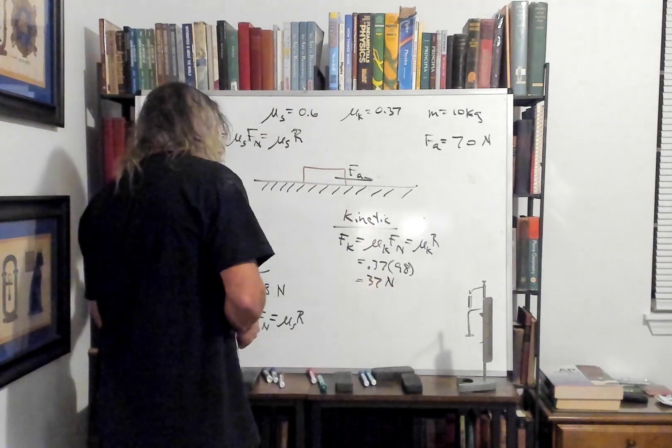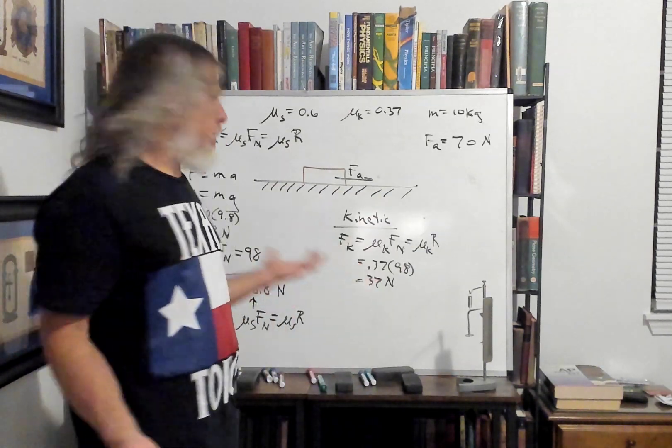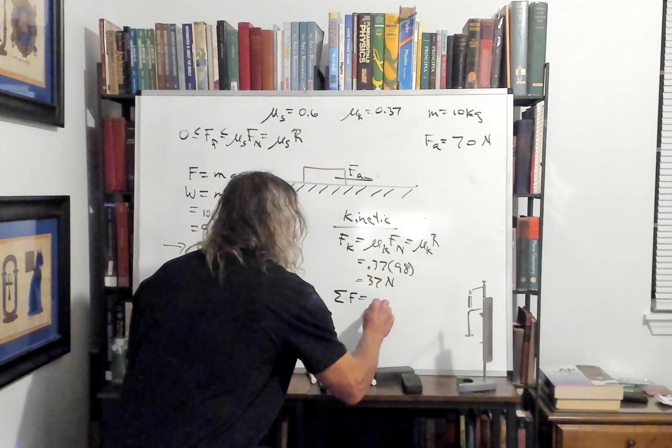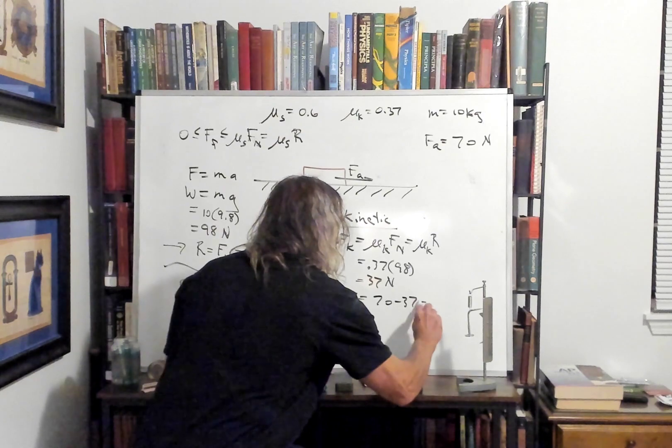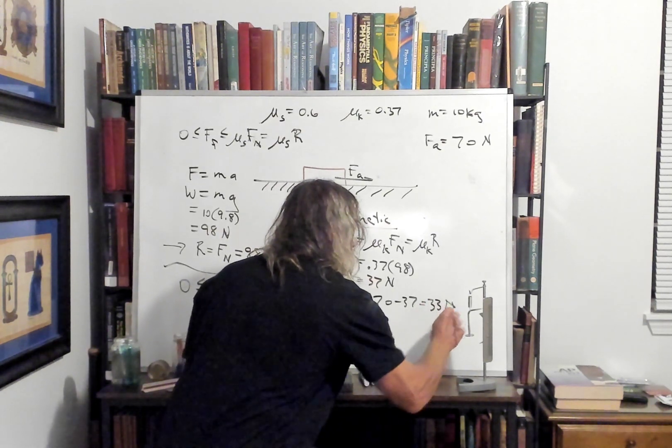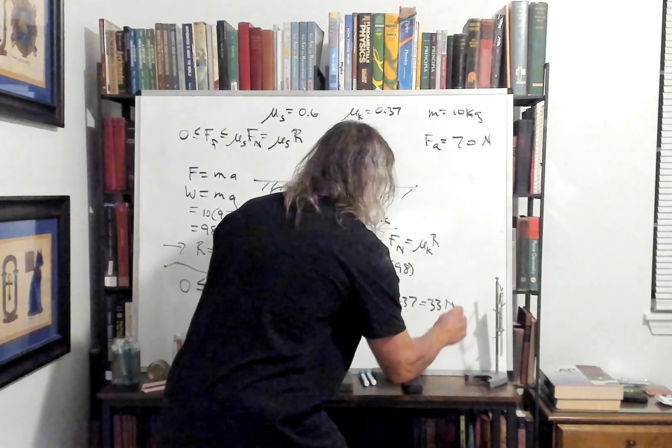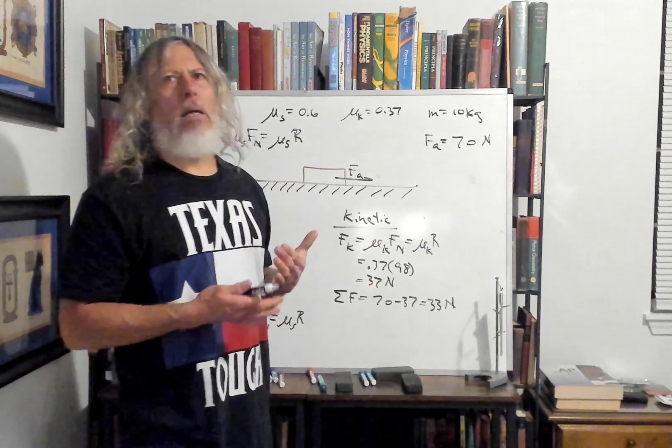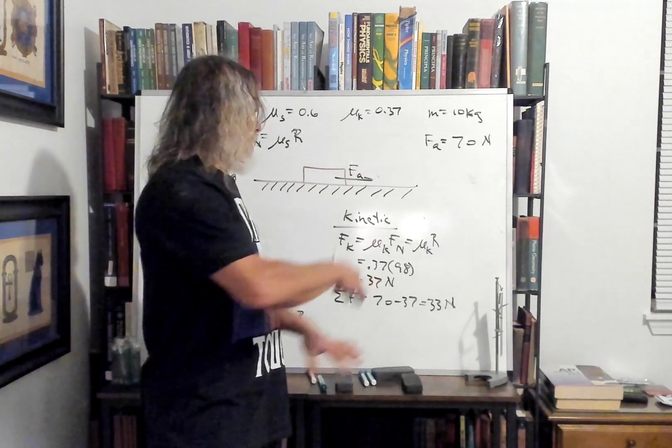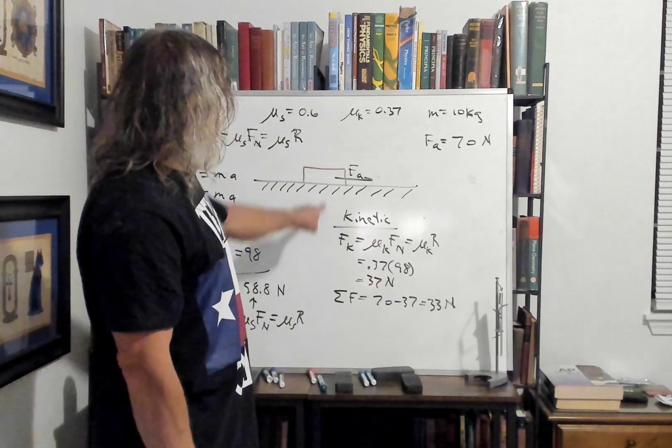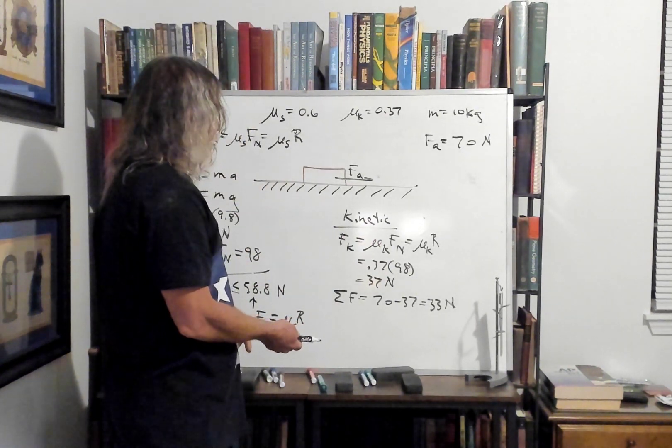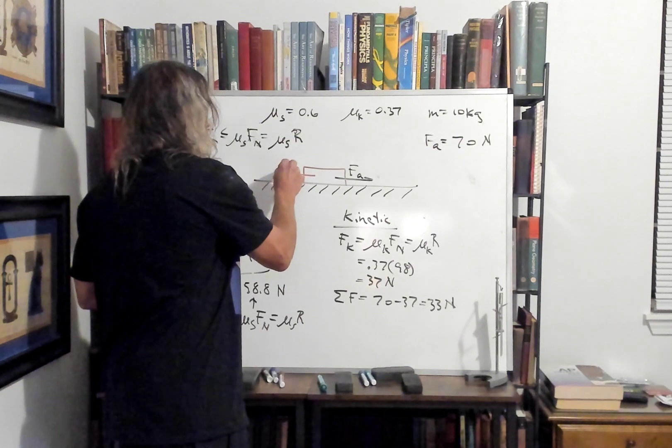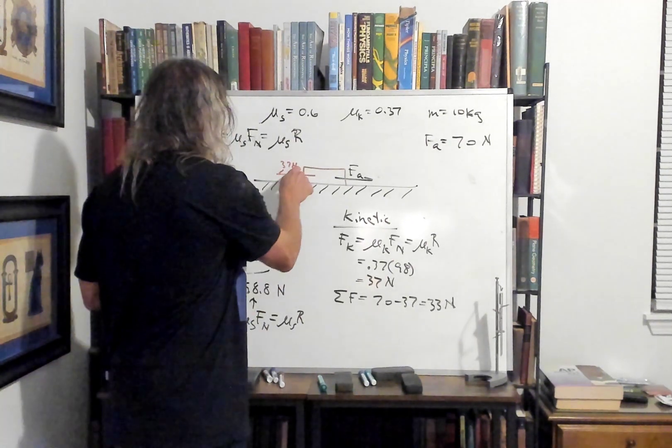So we got 37 newtons of kinetic this way, 70 that way. We get our total. So the net force is 70 minus 37, which is 33, 33 newtons. So we're pulling with a net of 33 newtons. 70 decreased by the 37. 37 is always this way. I'll go ahead and draw it in here at this point. So you got 37 newtons this way because of the kinetic friction.